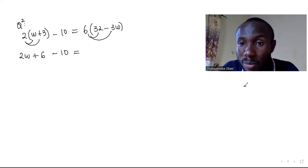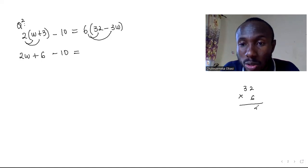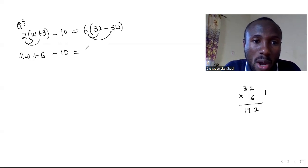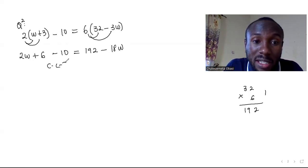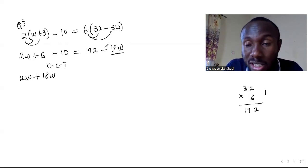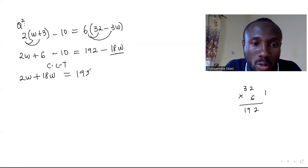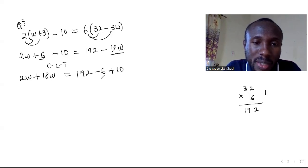Let me work out 6 times 32: 6 times 2 is 12, carry 1, 6 times 3 is 18 plus 1 is 19, so that gives 192. Then minus 6 times 3 gives 18w. Now collect like terms: 2w, and this 18w comes over to become plus 18w — as I explained, when a term crosses the equality sign the sign changes.